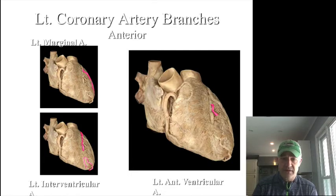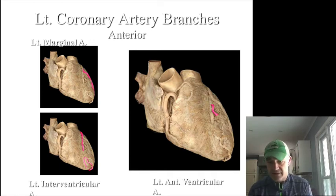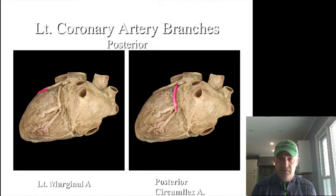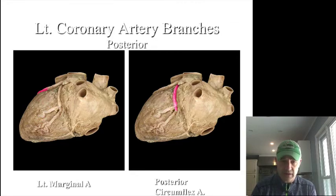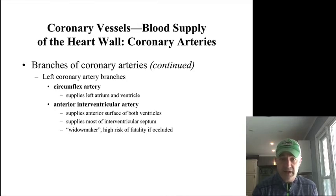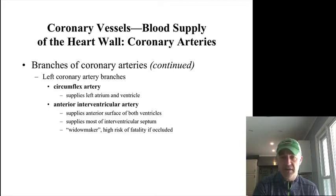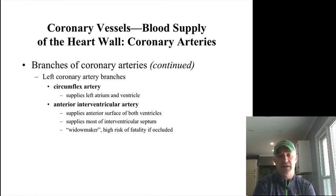On the left side, the coronary branches — you can see the anterior side of the heart. The main left coronary artery branches, with the main one being the circumflex artery, supplying both the left atrium and the ventricle. The front side of the heart has the anterior interventricular artery, which supplies blood to both ventricles. This tends to be the most critical one — if there is a blockage in this artery, it is most likely to be fatal because it supplies such a large portion of the left ventricle.